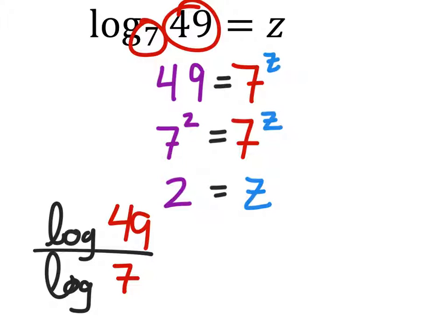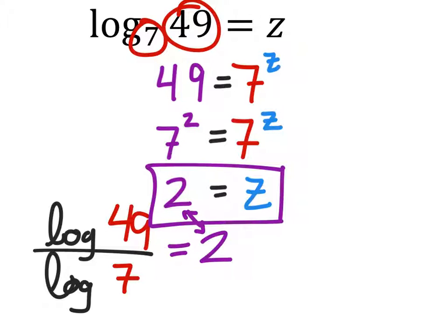And if you put this into a calculator, log 49 divided by log 7, which you can do, you would still get the same 2 that we have here. So, as it turns out, z still is 2. It's just showing you a different way to solve this.